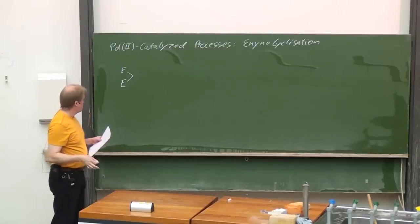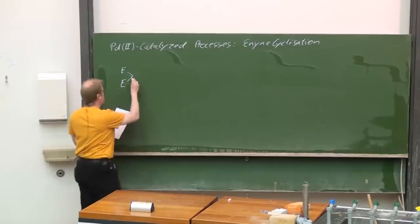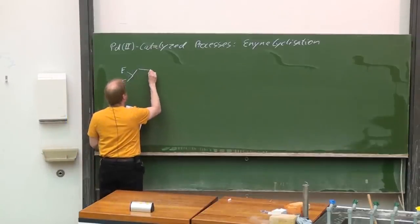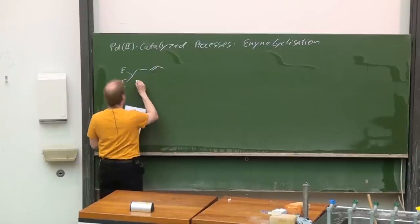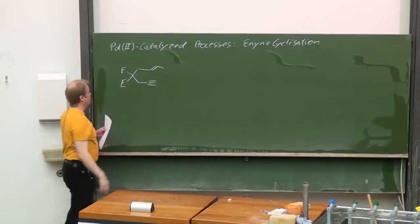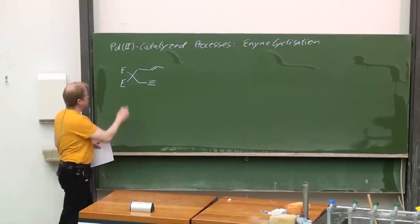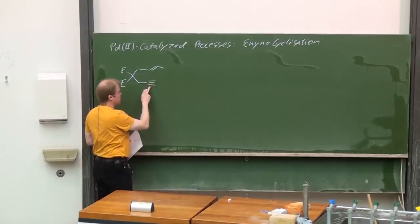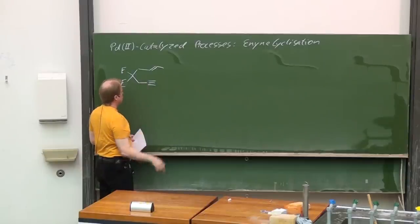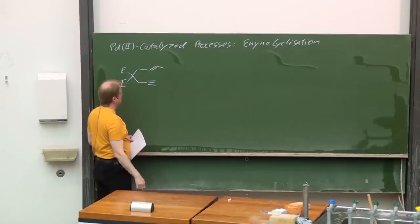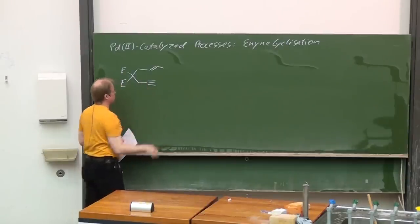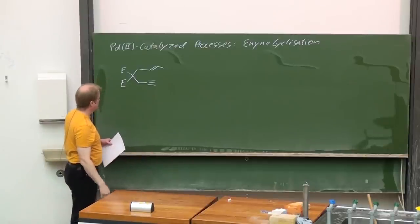Starting from a malonate, two substituents are introduced: one bearing an olefinic moiety, the other one an alkyne. This is of course easy to be set up—a model compound where the enyne cyclization can be tested with various metals and transition metal catalysts.